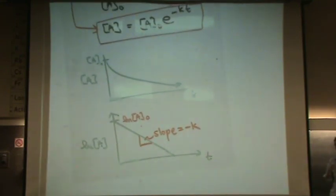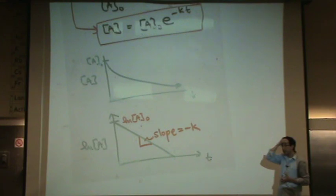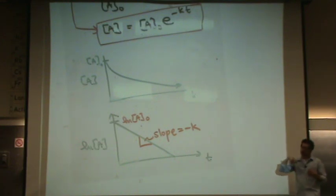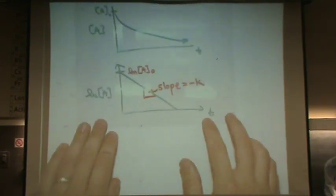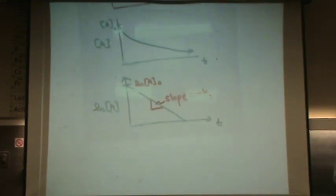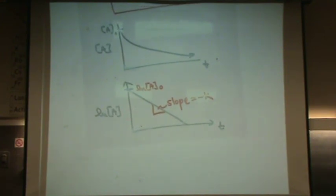So if I find the slope, is that equal to the rate constant? Not exactly. Got to multiply by minus one to get the rate constant. But this is an extremely convenient way to get the rate constant if you're given data. Given data, you plot it out. You can get the slope from the integrated rate law.